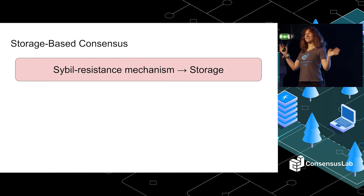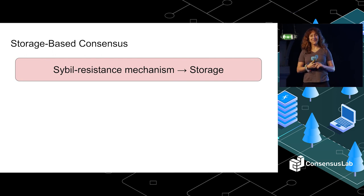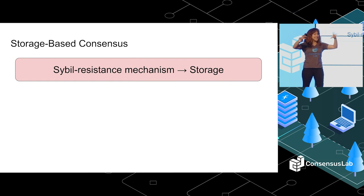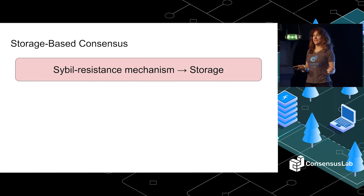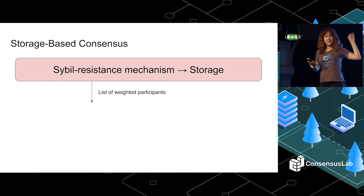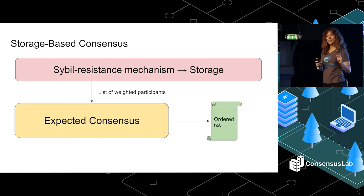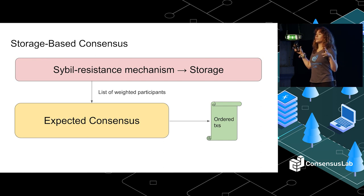We won't be talking about the cryptography today because this is ConsensusLab, not CryptoNetLab. We're going to treat it as a black box and assume we have this Sybil resistance mechanism based on storage. What we get out of this layer is a list of weighted participants.